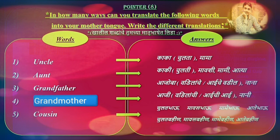Pointer eight. In how many ways can you translate the following words into your mother tongue? Write the different translations. Uncle: Kaka, Sulta, Mama. Aunt: Kaki, Sulti, Moushi, Mommy, Atya. Grandfather: Azova, Vadiila, Vadiil, Tatsir.